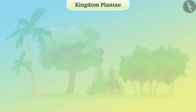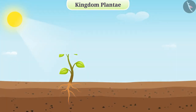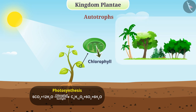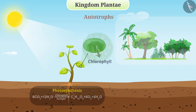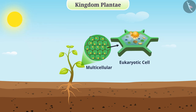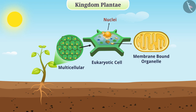Kingdom Plantae consists of all autotrophs which perform photosynthesis with the help of chlorophyll and can make their own food. All plants are members of Kingdom Plantae. They are all multicellular organisms which are formed from eukaryotic cells — that is, they have well-defined nuclei in cells and membrane-bound organelles.